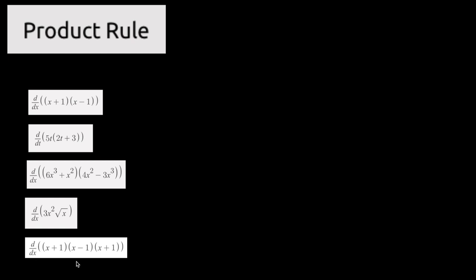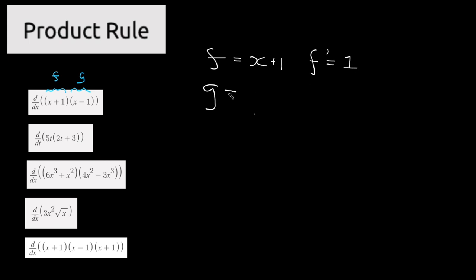Try and solve these problems and then we'll go through the solutions. In the first example, let's define our terms. We have one bracket as f and the other bracket as g. So f is equal to x plus 1, and f prime — the derivative of f — gives x becoming 1 and the constant 1 becoming 0, so we're left with 1. Then g is equal to x minus 1, and g prime will be the same: x becomes 1 and the negative 1 becomes 0, so g prime is also 1.